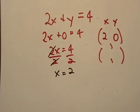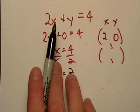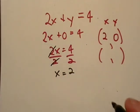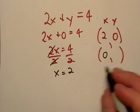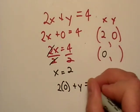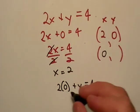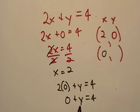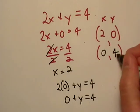Now let's do another substitution right here, I'm going to put zero in for x this time. So that's going to be two times zero plus y is equal to 4, well that's just going to be zero plus y equals 4, y equals 4.